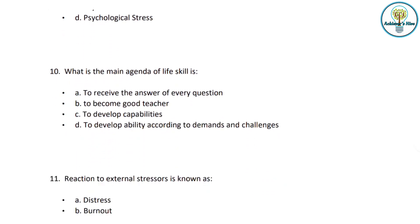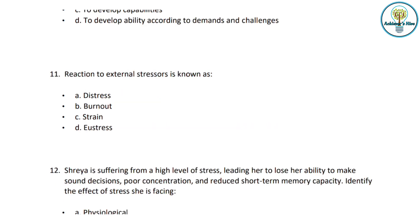Next question: What is the main agenda of life skills? Options: to receive the answer to every question, to become a good teacher, to develop capabilities, or to develop ability according to demands and challenges. Option D is the correct answer. Developing ability according to demands and challenges is the main agenda of life skills. The other options are not objectives of life skills.